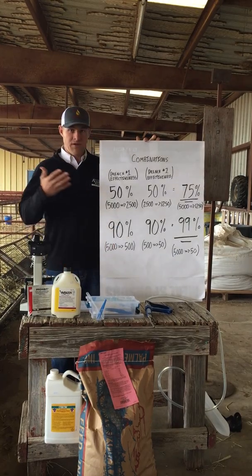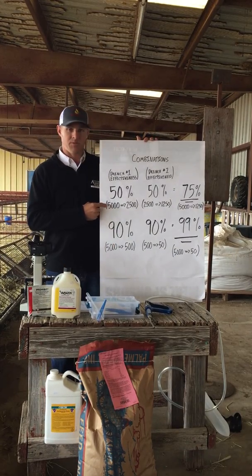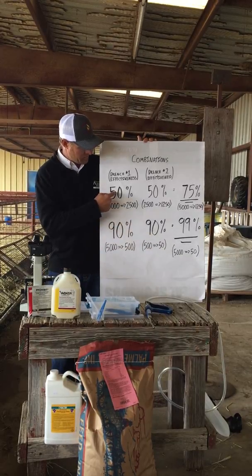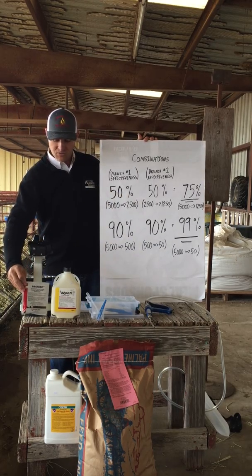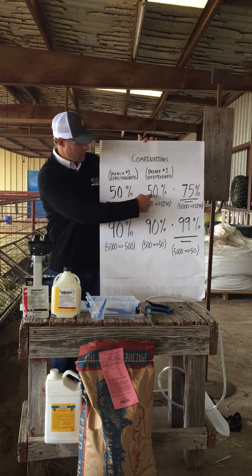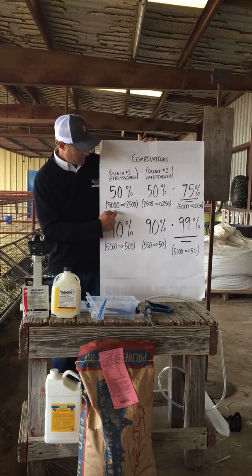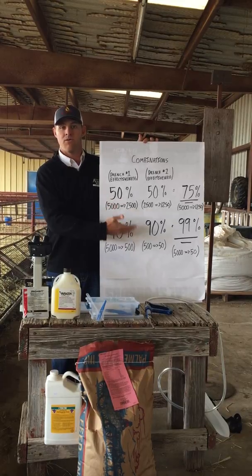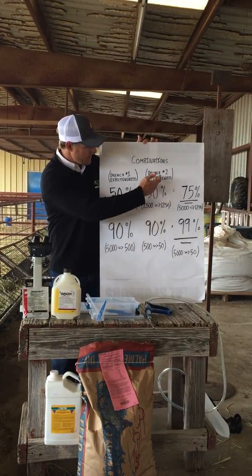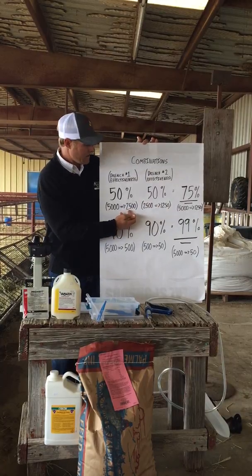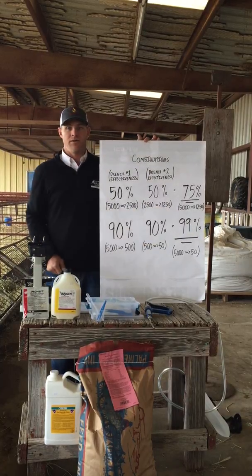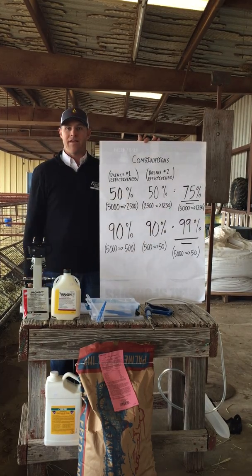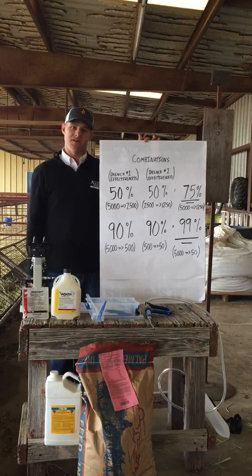Theoretically, if those same animals had a 5,000 eggs per gram parasite load and you used product one at only 50% effective, and then product two also at only 50% effective because you used it until it stopped working too — 50% of 5,000 is 2,500 eggs per gram. You kill half the parasites, but there are still 2,500 eggs per gram remaining. Drench two should then kill half of those, leaving 1,250 eggs per gram — meaning you only achieved a 75% reduction in parasite load overall.